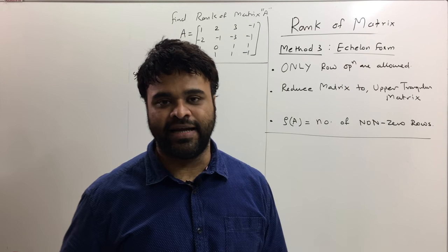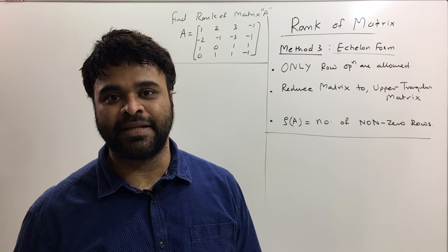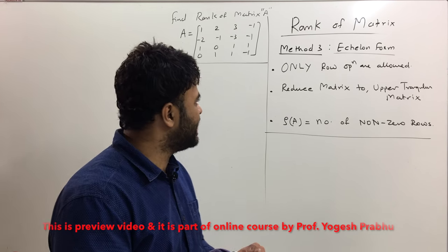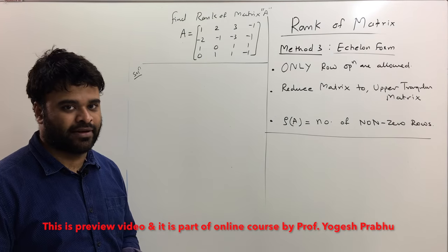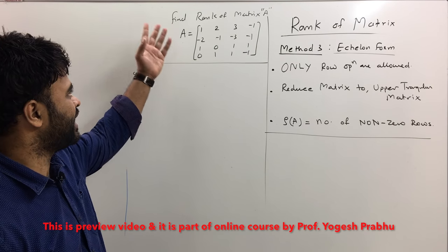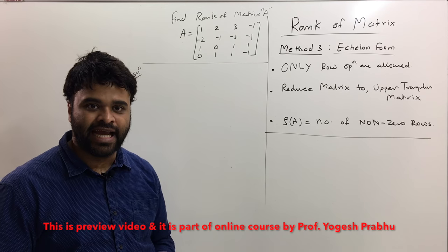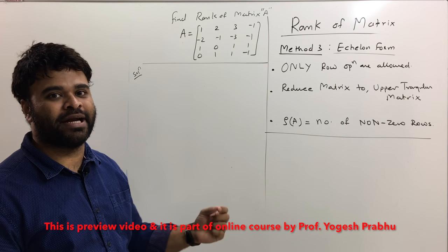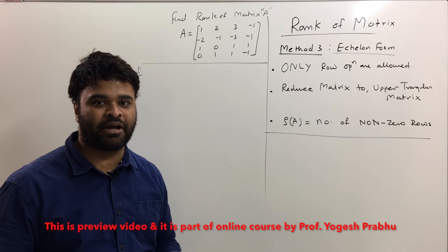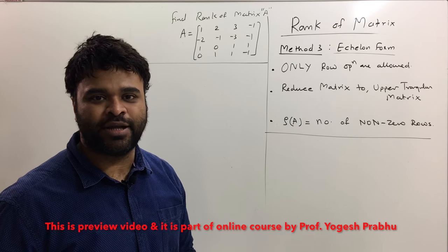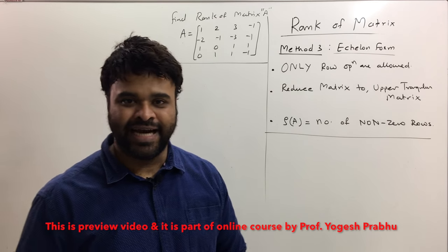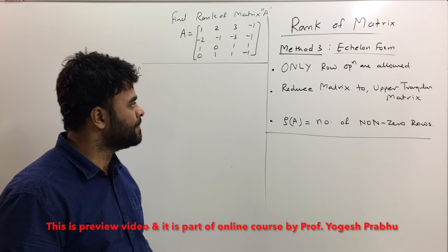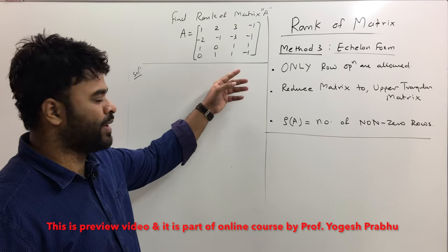Let's look at the third method of finding rank of matrix, called reducing it to echelon form. The first point here is this is like the default method. In an exam, if you get a question to find rank of matrix A and no method is mentioned, the best method you can use is echelon form because it is the quickest and fastest of all the methods.